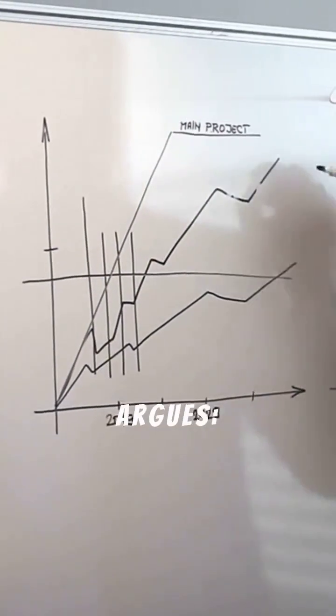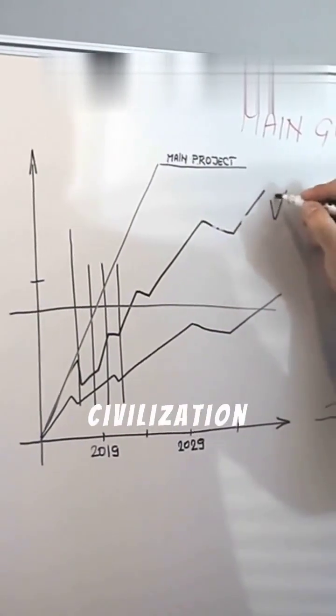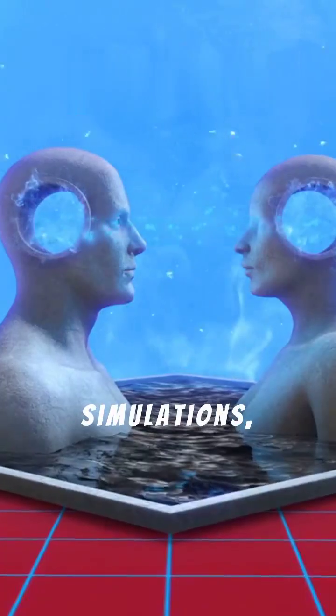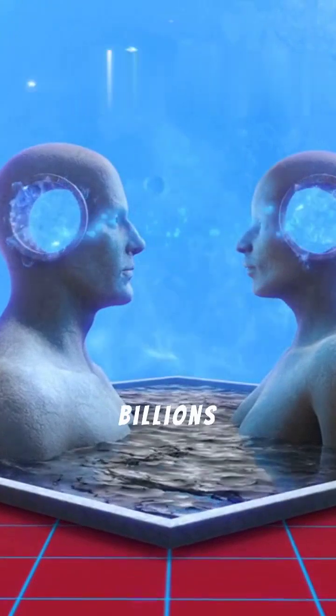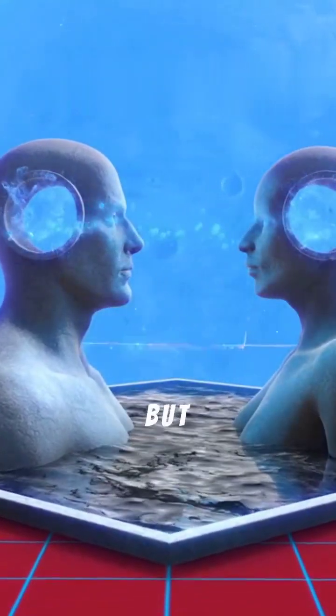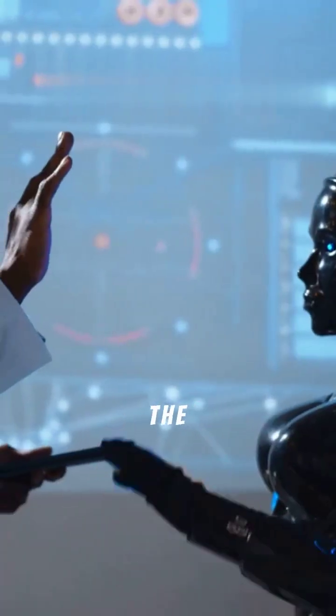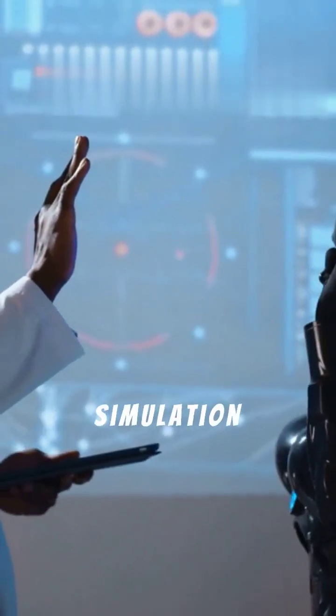Mathematician Nick Bostrom argues, if any civilization can run realistic simulations, there could be billions of simulated realities, but only one base reality. The odds were more likely in a simulation than not.